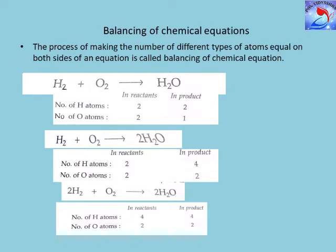In the reaction H₂ + O₂ → H₂O, H₂ and O₂ are reactants and H₂O is the product. Counting atoms: hydrogen atoms in reactants — 2; in products — 2. Oxygen atoms in reactants — 2; in products — 1. The number of hydrogen atoms is equal on both sides, but the number of oxygen atoms is unequal.